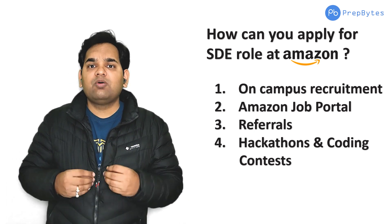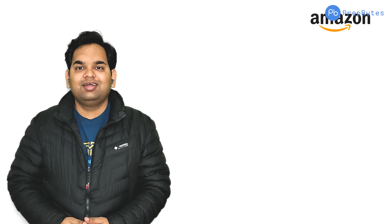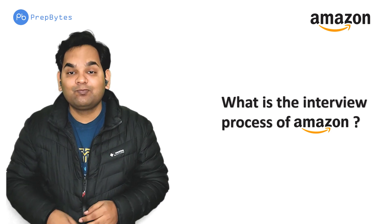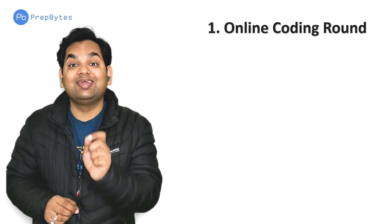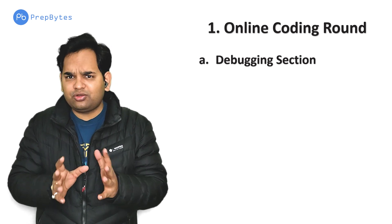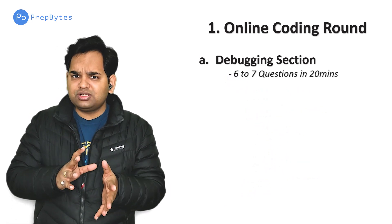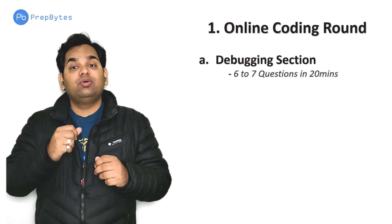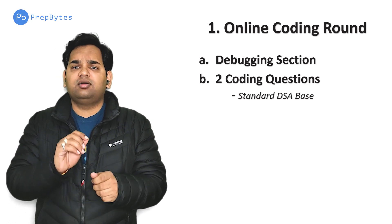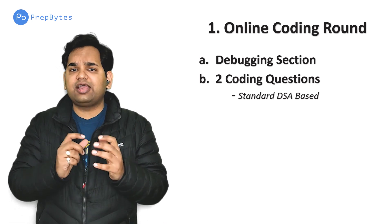Next, let's look at the interview process and how many rounds there are. The first round is an online coding round with three to four sections. The first section is a debugging section — you'll get basic code with if-else and for-loop type problems, around six to seven questions in 20 minutes. The second section has two coding questions to solve in 60 to 70 minutes — easy to medium DSA-based standard questions or variations of famous algorithms.